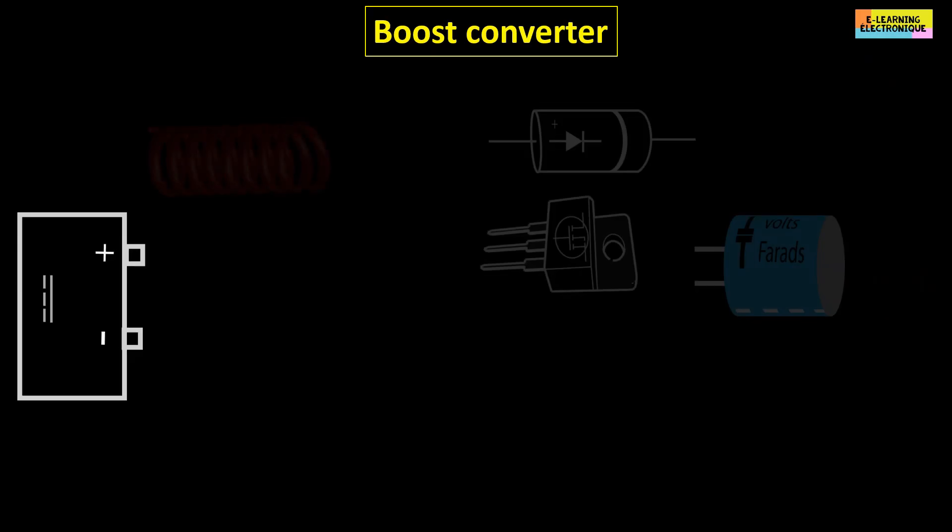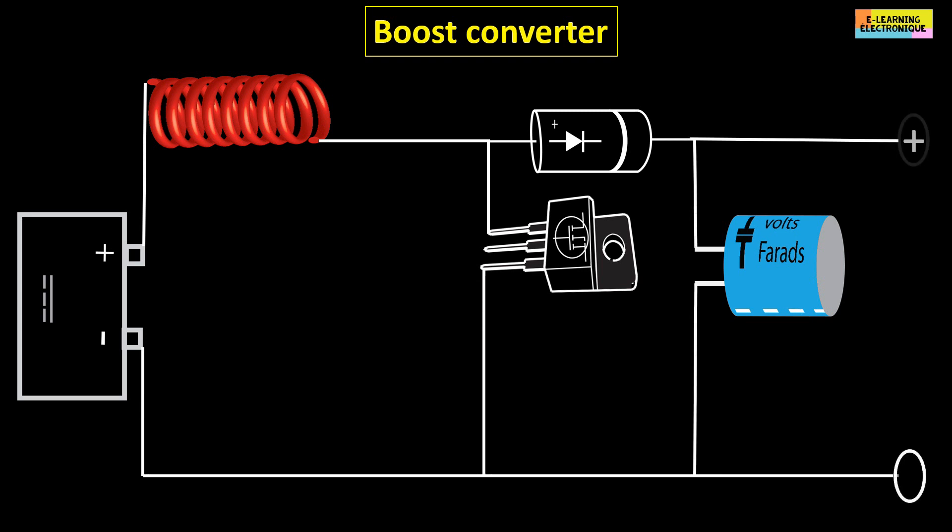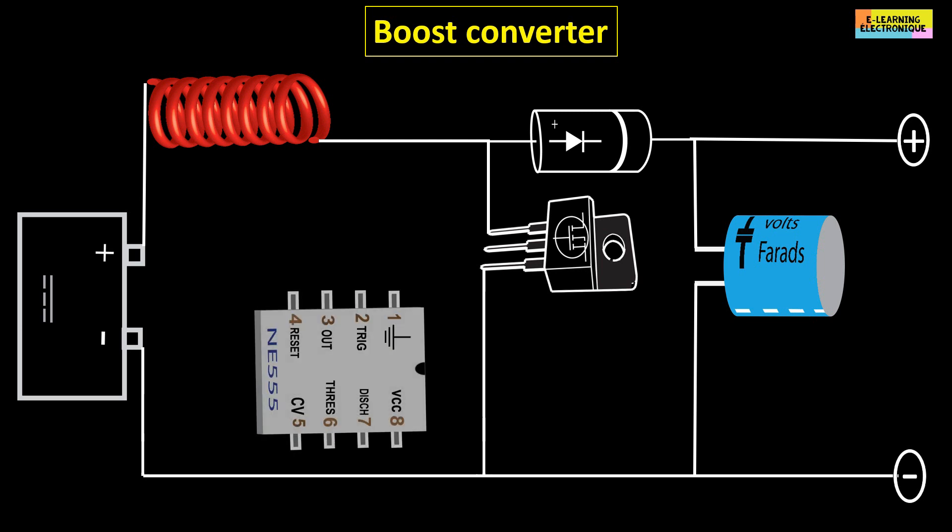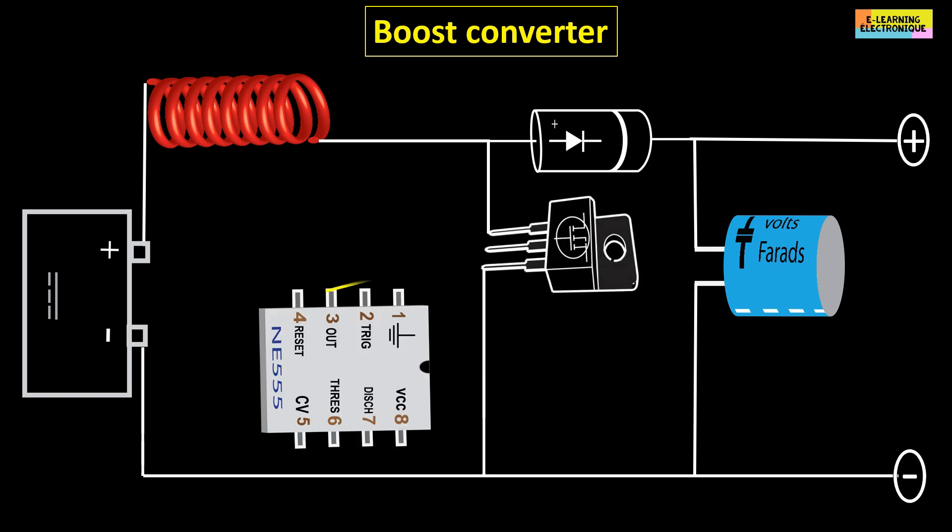Here is the operating principle of a boost converter. The circuit includes a direct current source, a coil, a MOSFET, a diode and an electrolytic capacitor. The whole is connected as shown in the figure. The control of this circuit is done through an electronic chip which contains an oscillator circuit. The MOSFET plays the role of a switch. Its opening and closing is controlled by the oscillator circuit.